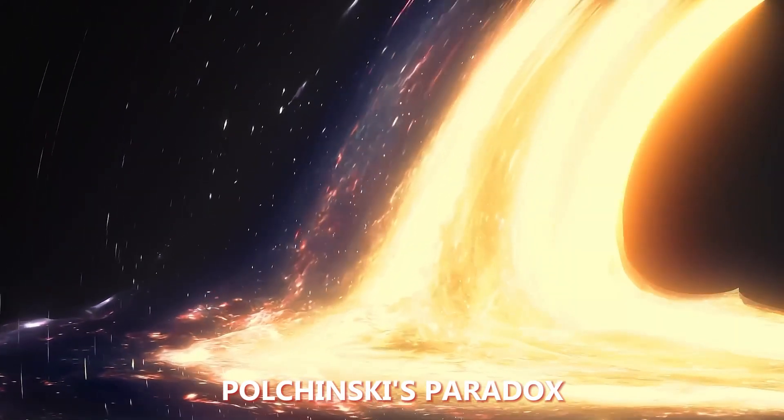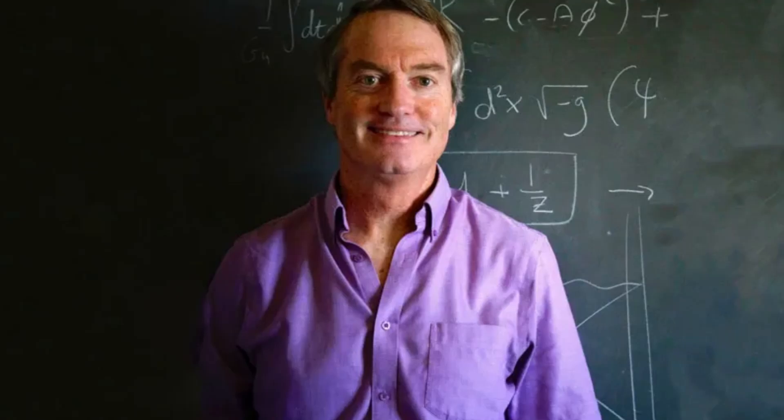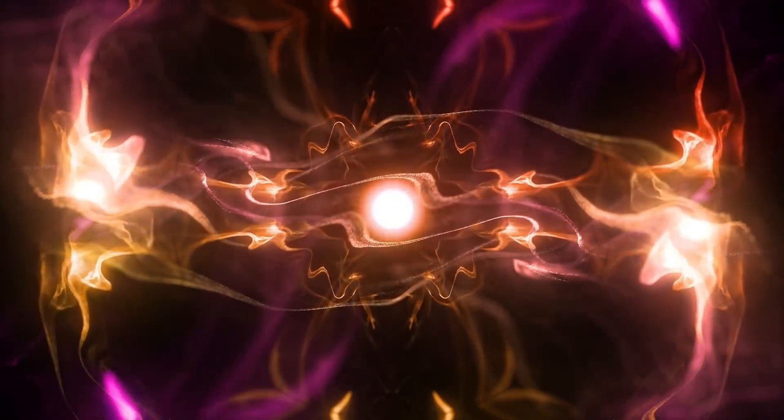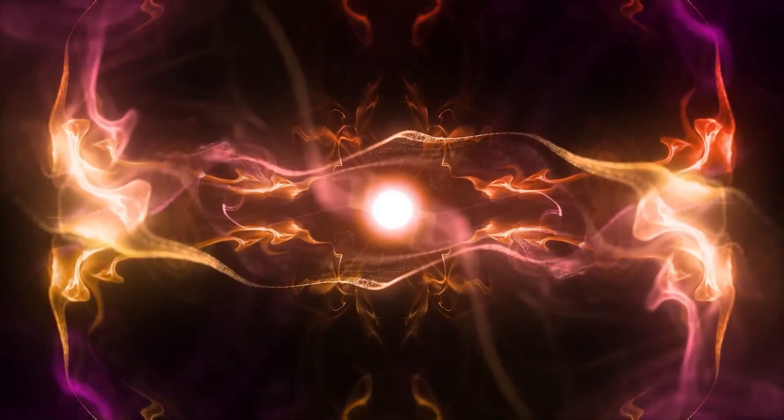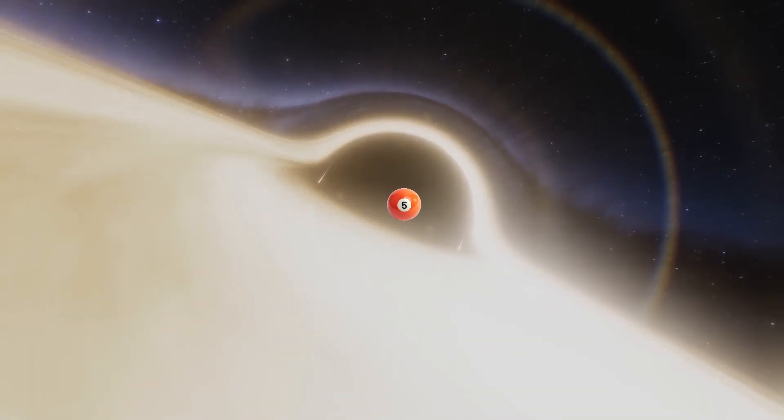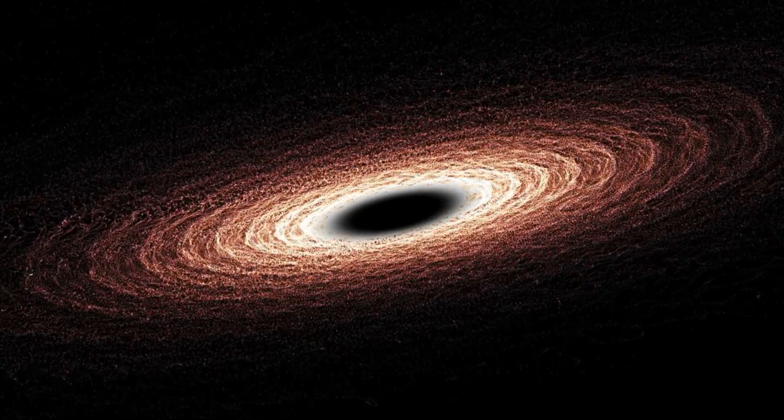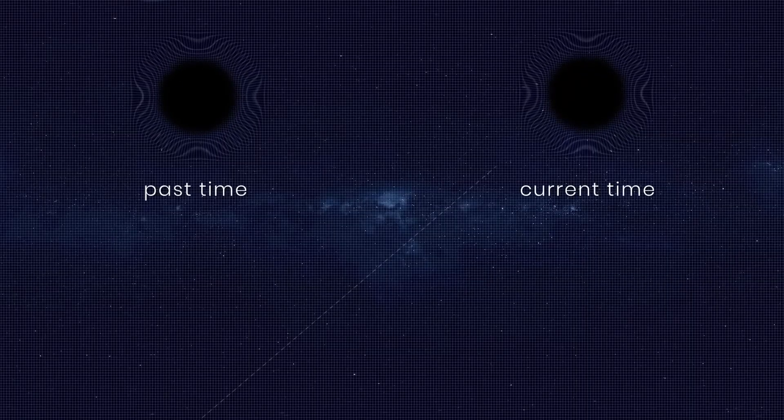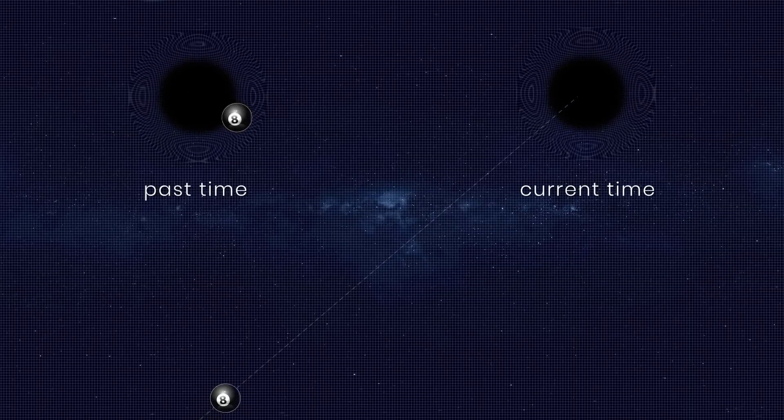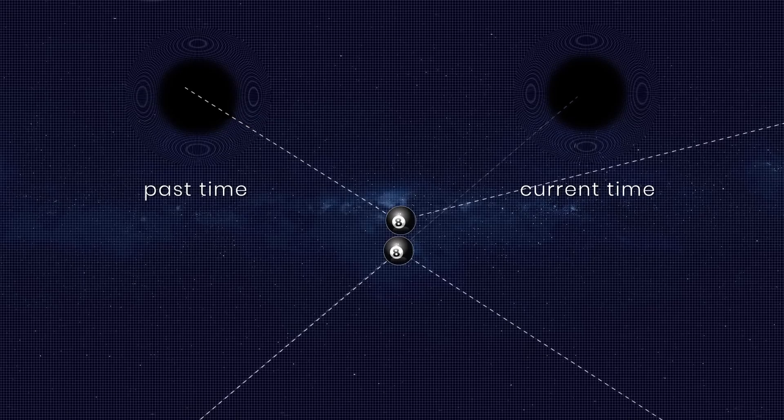Polchinski's Paradox. The late great Joseph Polchinski is the famous theoretical physicist who wrote the book on string theory. But Polchinski also came up with a potentially paradoxical situation involving a billiard ball sent through a wormhole that travels back in time. In this scenario, the billiard ball is fired into a wormhole at such an angle that if it continues along the path, it will exit the wormhole in the past at the right angle to collide with its earlier self, thereby knocking it off course and preventing it from entering the wormhole in the first place.